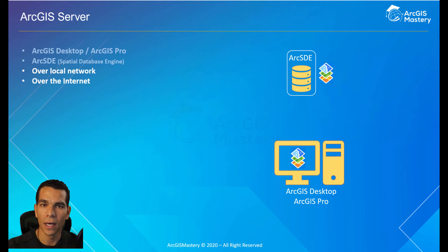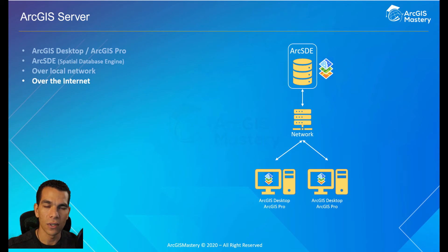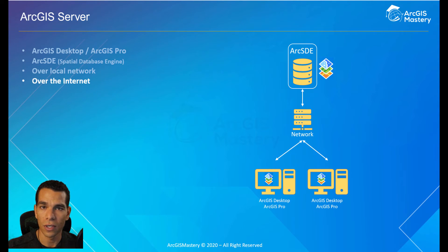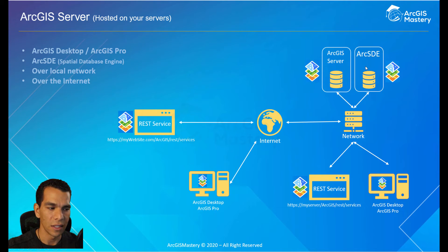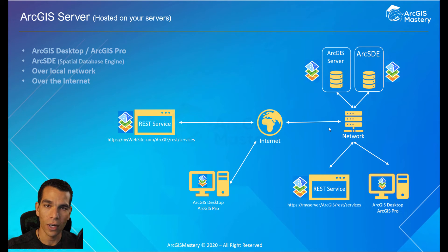ArcSDE allows several people to connect to the same server so they can contribute and use the same map. It also allows you to host a large amount of data. Multiple people using ArcGIS Desktop or ArcGIS Pro can contribute and use the same data on an ArcSDE server connected through a network. For example, in an organization, you can connect to an ArcSDE database engine using your network so multiple people can work on the same data.